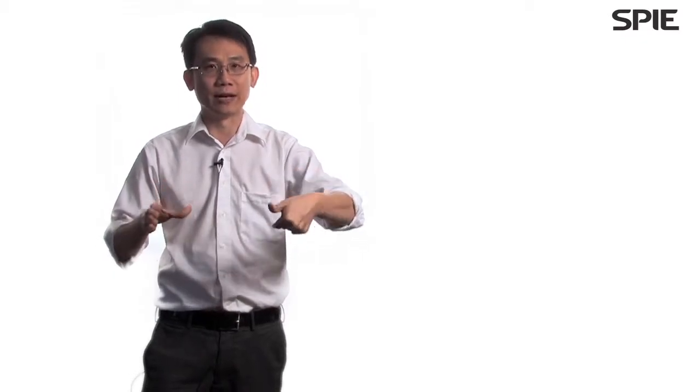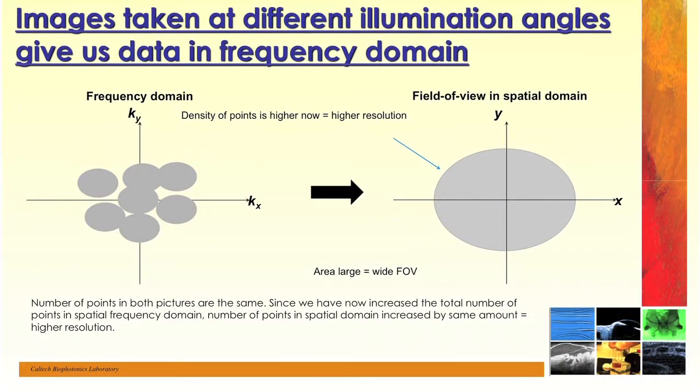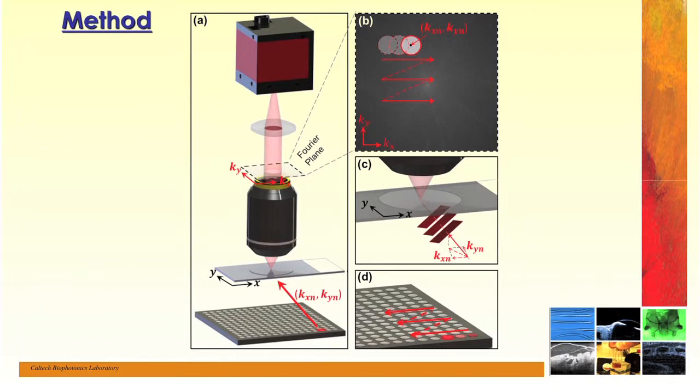What we do is illuminate with light at different angular illuminations and take a bunch of low-resolution snapshots, then computationally extract both the phase and the amplitude variations of the light coming from the object. With this more complete set of data we can render a high-resolution, wide field-of-view image. We can also refocus our image over a very large depth of field of about 300 microns — with resolution comparable to a 20x microscope system — very flexibly after the data has been taken.